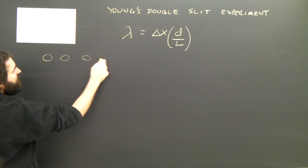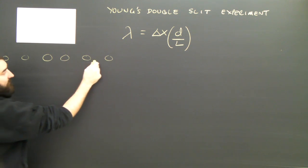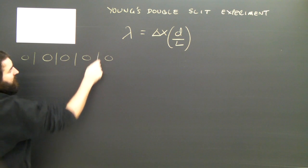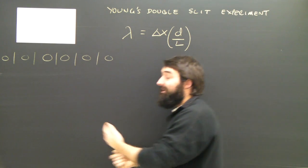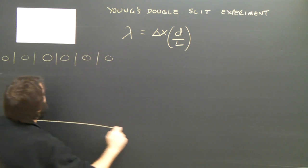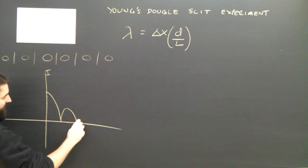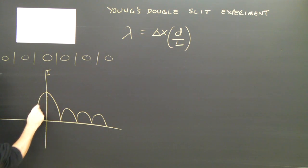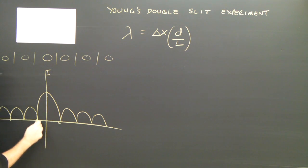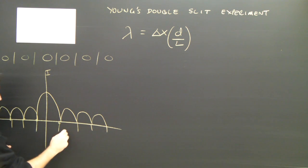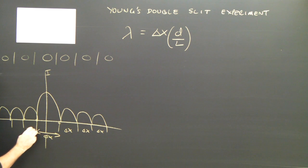If I were to draw what I mean, it would look something like this: bright spot, dark area, bright spot, dark area, bright spot, dark area, bright spot, dark area. If I were to graph their intensity, I would see that the middle one was the most intense and then it went down fairly quickly. Most importantly, the distance between all these dark fringes — where the intensity goes to zero — they would all be the same distance apart. We call that delta x.